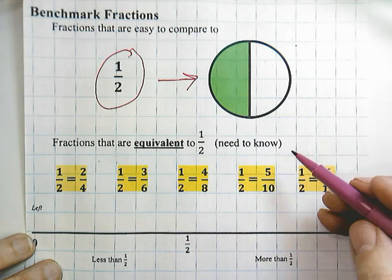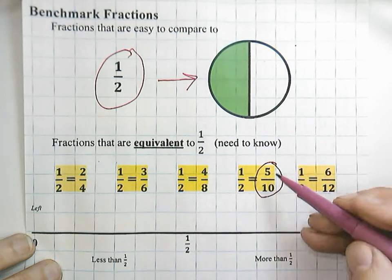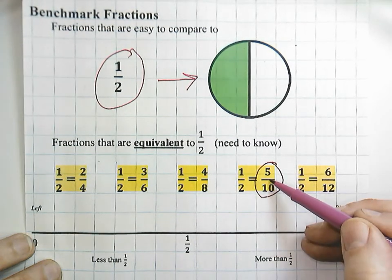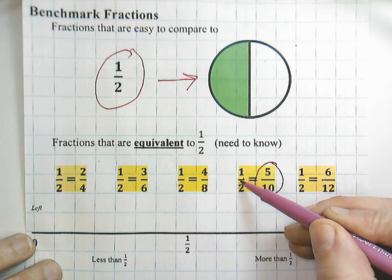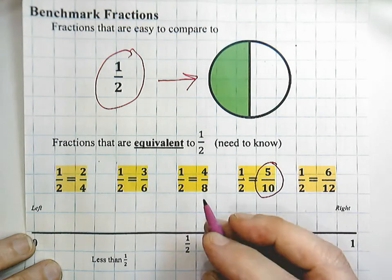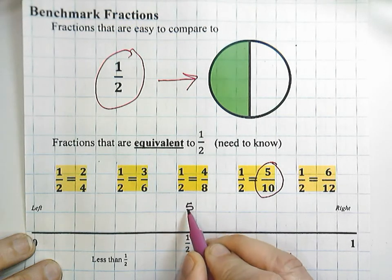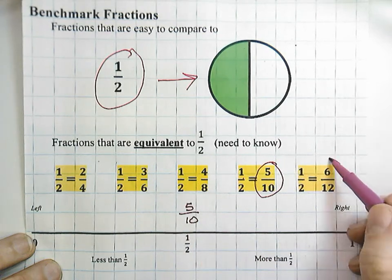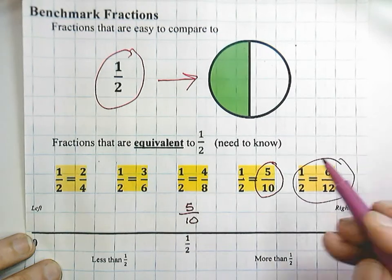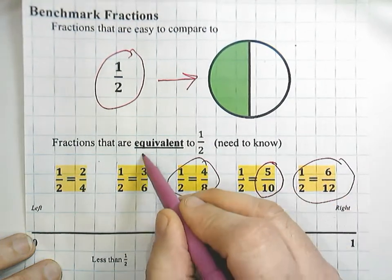In other words, if I wanted to place five-tenths, I know that five-tenths is equal to one-half, so I would write it right here. That would hold true for all of these equivalent fractions to one-half.